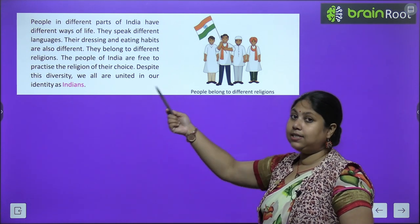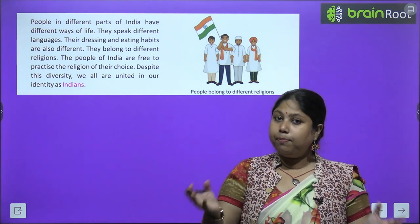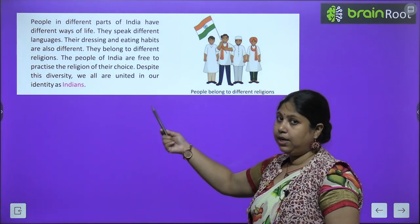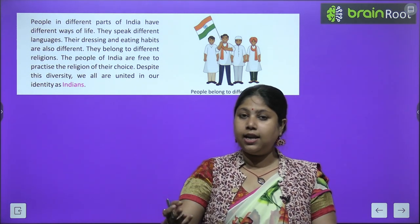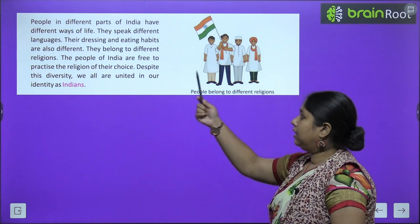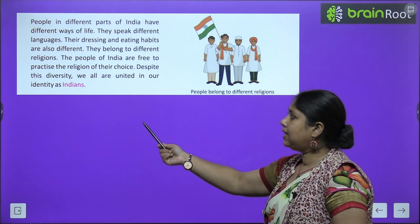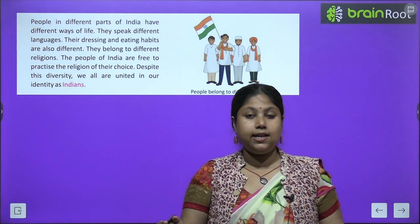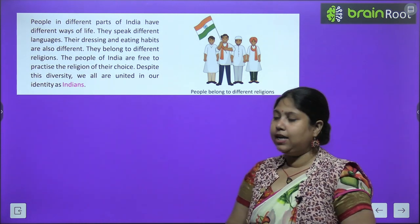Their dressing and eating habits are also different. Har kisi ka dress pehenne ka tarika, khana khane ka tarika, khana pasand-na pasand — sab kuch alag-alag hai. They belong to different religions also. Sabhi log alag-alag dharm ke bhi hain — kuch Hindu hain, kuch Muslim hain, kuch Sikh hain, kuch Jain hain, kuch Buddh dharm ke hain. India mein ek saath rehte hain. The people of India are free to practice the religion of their choice. Despite this diversity, we all are united in our identity as Indians — hum sabhi Bharatiy hain. We all are Indians.